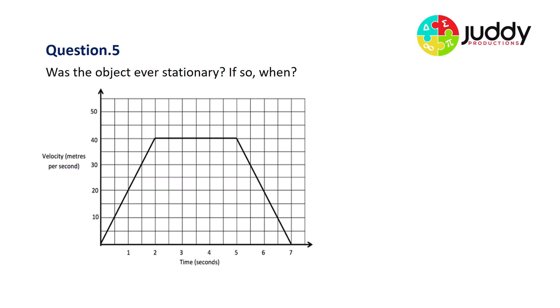Question number five, was the object ever stationary? And if so, when? No, the object was never stationary. Let's look at this. From zero to two seconds, this object is increasing its velocity. It's got constant acceleration. From two to five seconds, it has a constant velocity of 40 meters per second. From five to seven seconds, its velocity is continually decreasing, or we could call it a negative acceleration. So no, the object was never stationary.